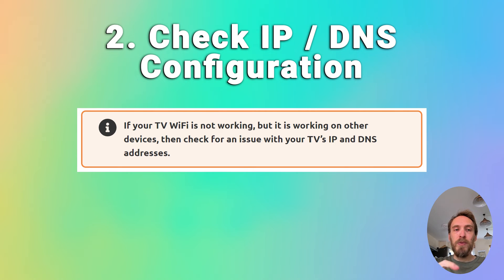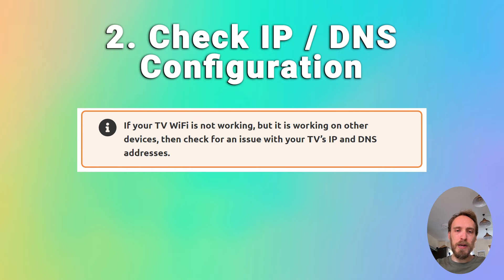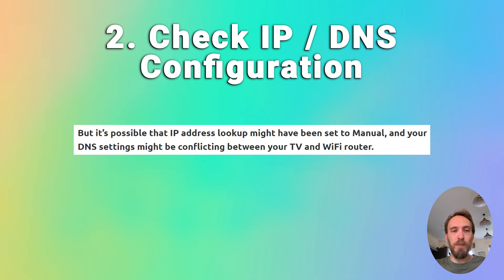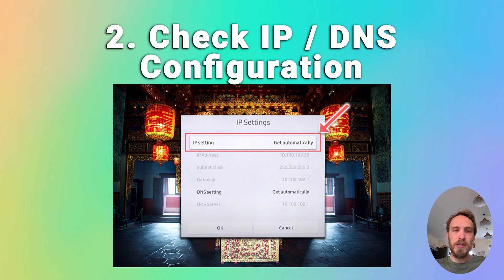If that doesn't help and Wi-Fi is not working on your TV but works on other devices, check your TV's IP and DNS addresses. Your TV should be set to automatically select an IP address from your router. It's possible the IP address lookup was set to manual, causing a conflict. Go into your TV's network settings and make sure the IP setting is set to obtain automatically — if it's on manual, change it to automatic and restart.